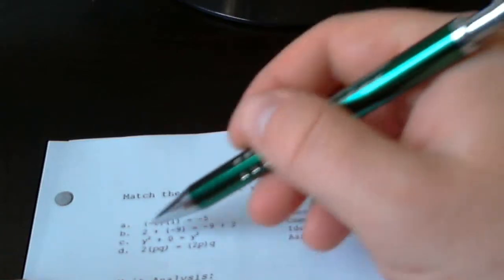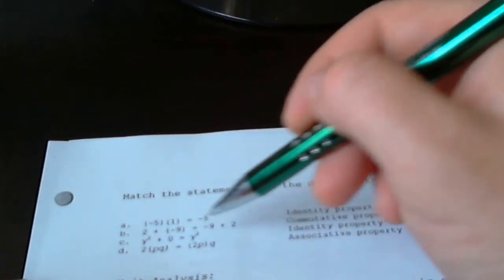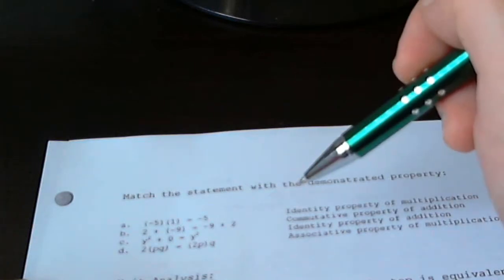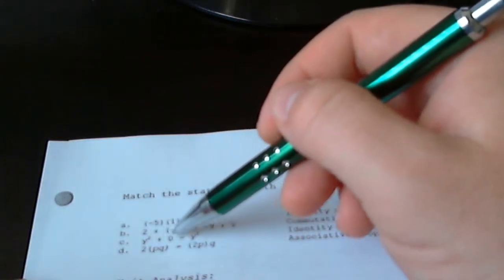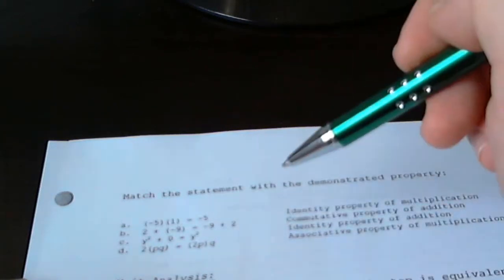The commutative property tells us how we can commute or move numbers around. So 2 plus negative 9 is the same thing as negative 9 plus 2. The identity property of addition: y squared plus 0 equals y squared.